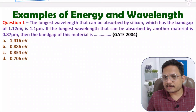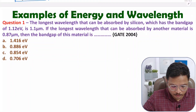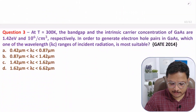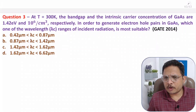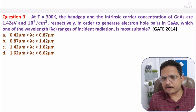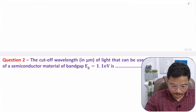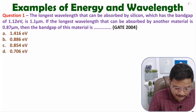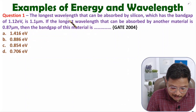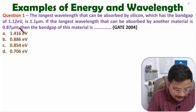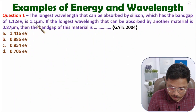I want you to try all those questions by yourself, so you can freeze the video in between. This is the second question and this is the third question. I hope you have paused the video and tried those questions. Now I am going to solve the first question. The first question is: the longest wavelength that can be absorbed by silicon, which has a band gap of 1.1 electron volt, is 1.1 micrometer.